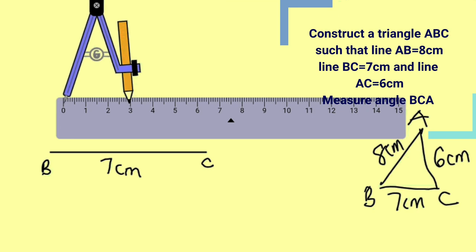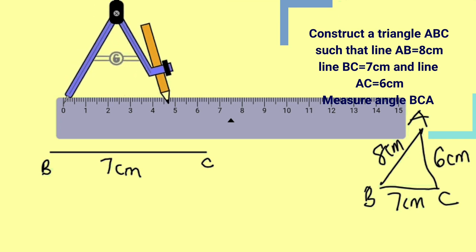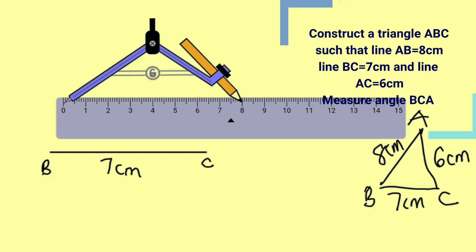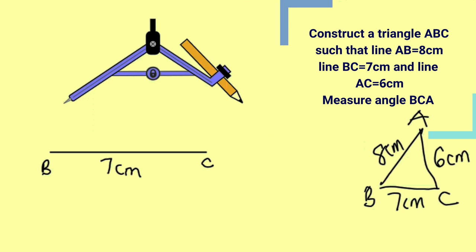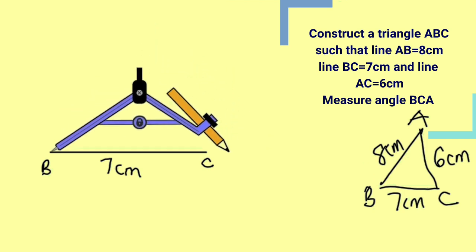So you can see that from the origin, I am going to expand the radius of this compass to measure 8cm. This is 8cm, now let me take away the ruler, place the pointer at point B, now construct an arc to the top.